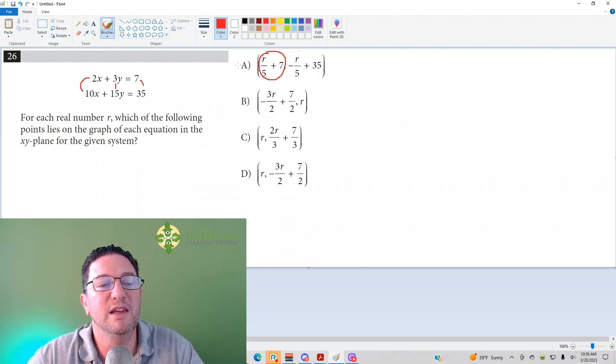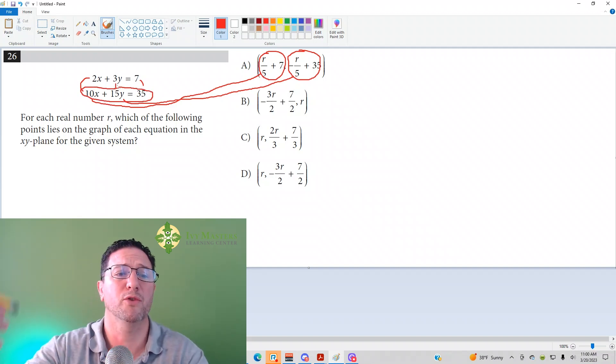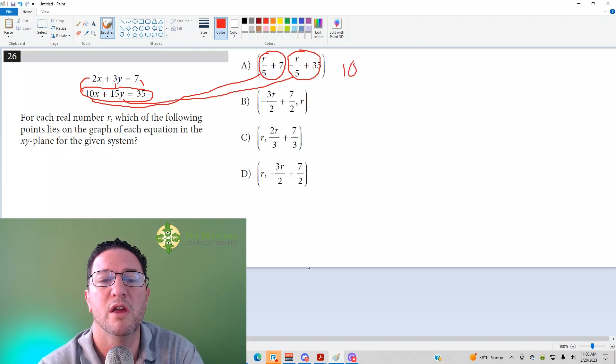So here we've got our first coordinate where X is R over 5 plus 7. So I can use either equation and plug R over 5 plus 7 in for my X. But when I look at the first equation, 2 times R over 5 is going to give me a fraction. So what I'm going to do instead is I'm going to plug into the second equation because R over 5 plus 7 will not give me a fraction when I distribute that 10. And then I'm going to plug the Y part in for my Y into that same equation. But again, I'm using this second equation so I don't get fractions.